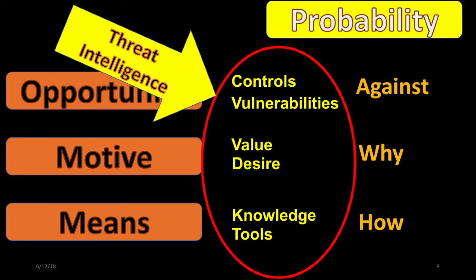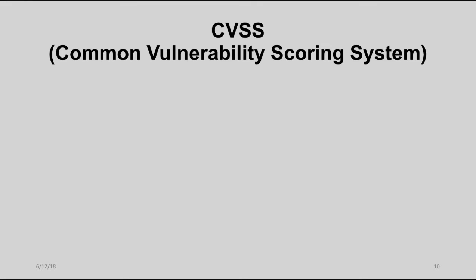Part or all of the information needed for probability is often contained in threat intelligence. Threat intelligence provides the threat description, including how the attack is accomplished, potential motive — although this is often not set across all attacks — and the vulnerabilities targeted. The CVSS, or Common Vulnerability Scoring System, takes all the information we just discussed and allows us to use an online calculator to derive a criticality score for a vulnerability in your operating environment.